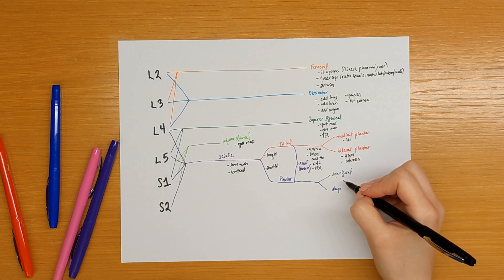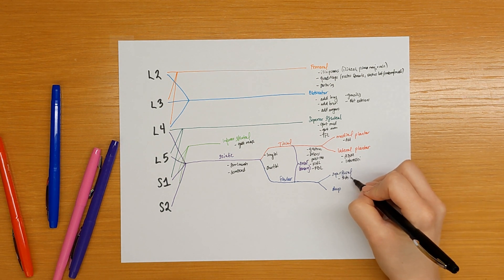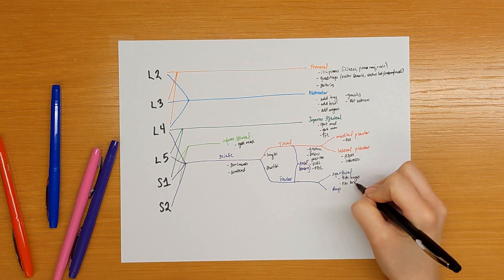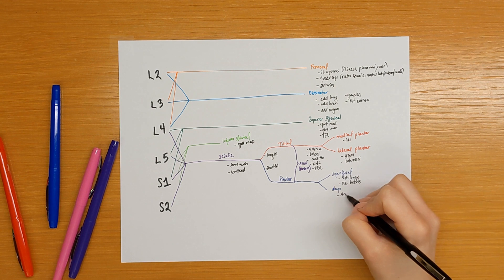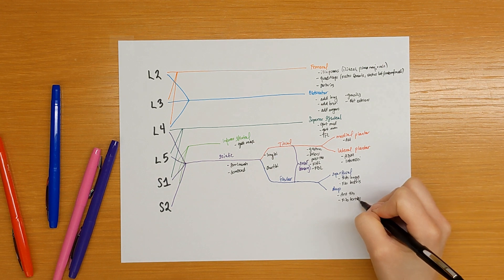The superficial branch of the fibular nerve innervates the anterior tibialis and fibularis tertius.